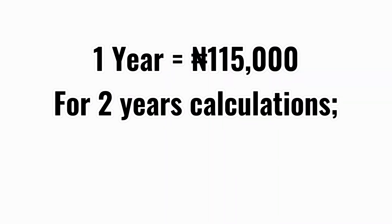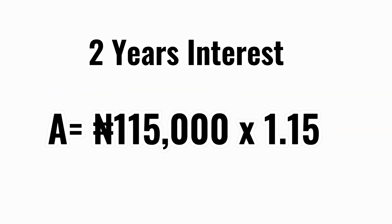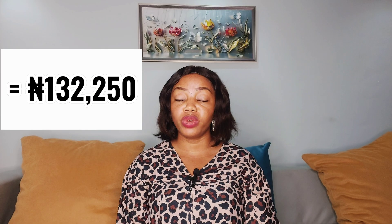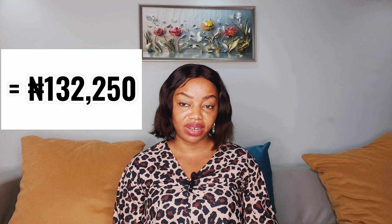After two years, your new principal is now 115,000. You are still earning 15% interest, but this time it's no longer on 100,000 — you are now earning interest on the extra 15,000 you earned last year as well. So A is now equal to 115,000 multiplied by 1.15, which gives you 132,250.